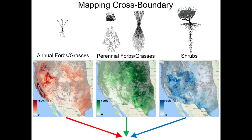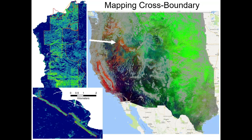You can zoom in and look at your pasture, your allotment, or your watershed, and see how the north is differing from the south. You can see how things are changing. At the bottom, you can actually pick up herbicide applications — those narrow strips — and see the effect that conservation practices are having on the ground. We're also doing this through time, mapping across scale and through time. There's a graph showing annuals, perennials, shrubs, and bare ground, starting in 1984 up until 2016.